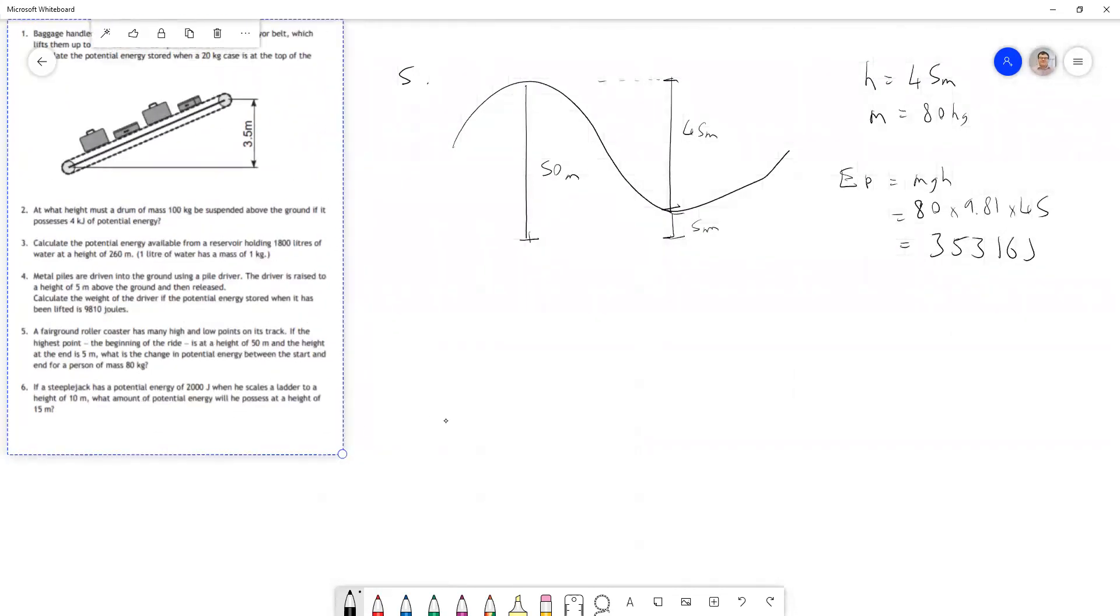Finally, question six: A steeplejack (a profession not in much demand these days, but they still exist to repair different types of roofs) has a potential energy of 2000 joules when scaling a ladder at a height of 10 meters. What amount of potential energy will they possess at a height of 15 meters? This is an interesting question because we can use the information we've been given.